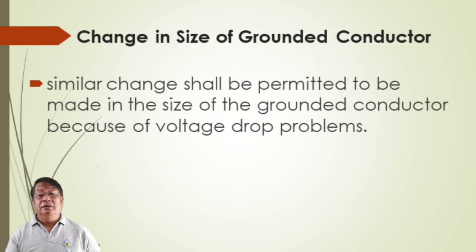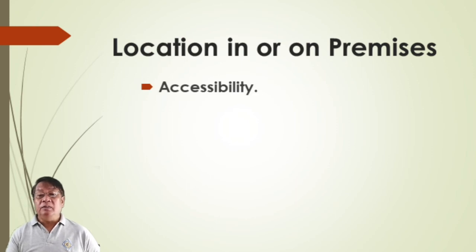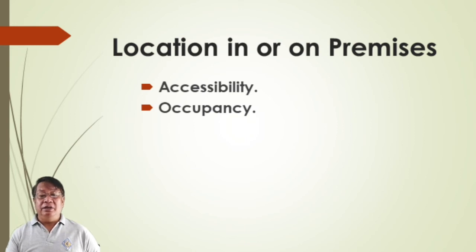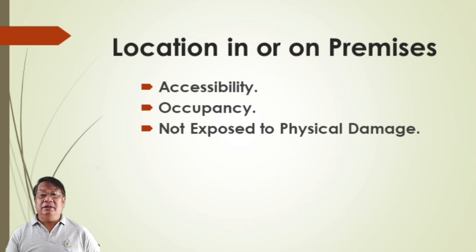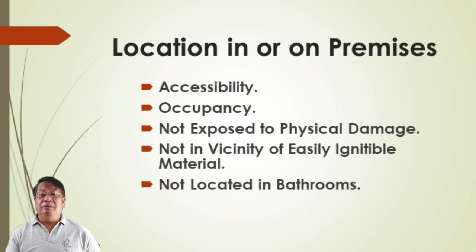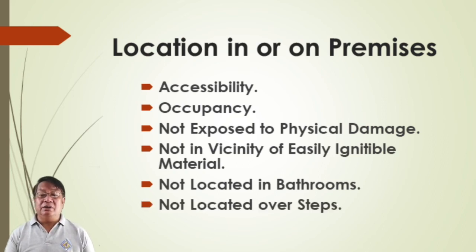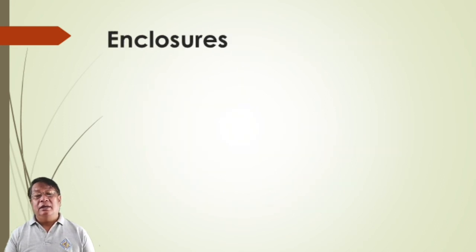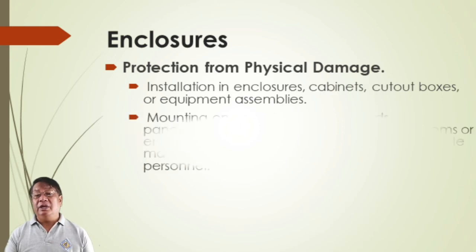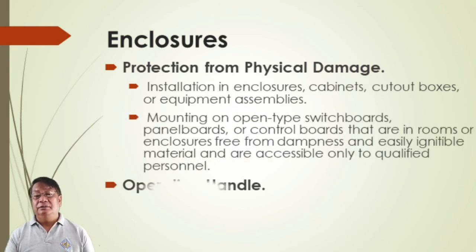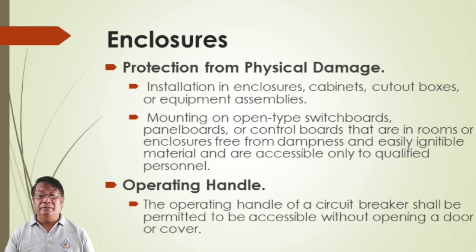Similar changes shall be permitted in the size of the grounded conductor because of voltage drop problems. For overcurrent devices, location on or in premises should consider accessibility, occupancy type, and not be exposed to physical damage, not in the vicinity of easily ignitable material, not in bathrooms, and not in oversteps. Enclosures are advised to protect from physical damage and to protect personnel.